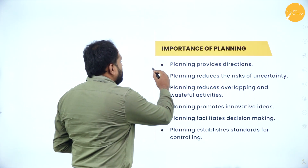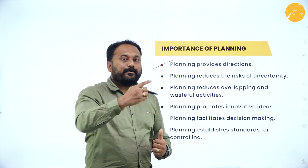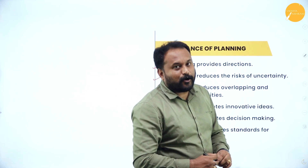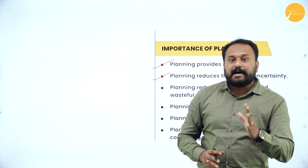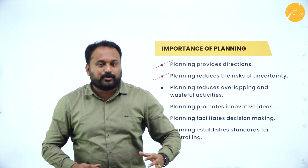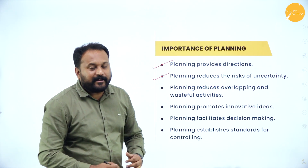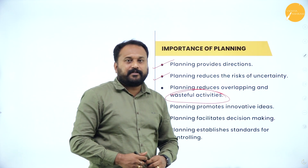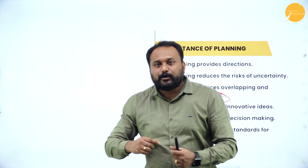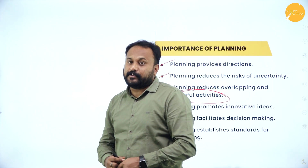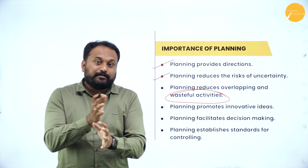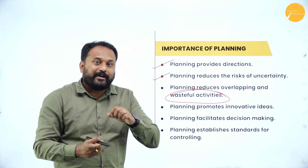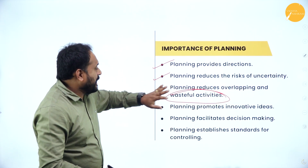Planning provides direction — it tells you who should do it, when it should be done, and how it should be done. Planning reduces the risk of uncertainty — if you have any uncertainty in your life, if you feel that it can be a risk, you should plan properly. Planning also reduces overlapping and wasteful activities. If we don't plan, sometimes we do repeated work, and when we do repeated work, the waste is more than utility — that is what it means to reduce overlapping and wasteful activities.